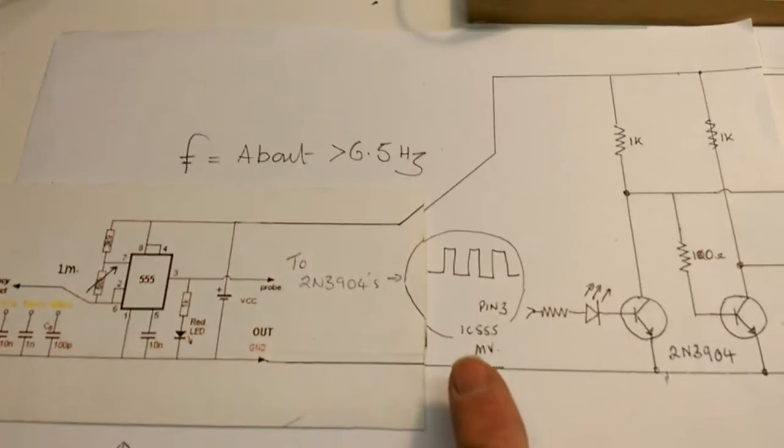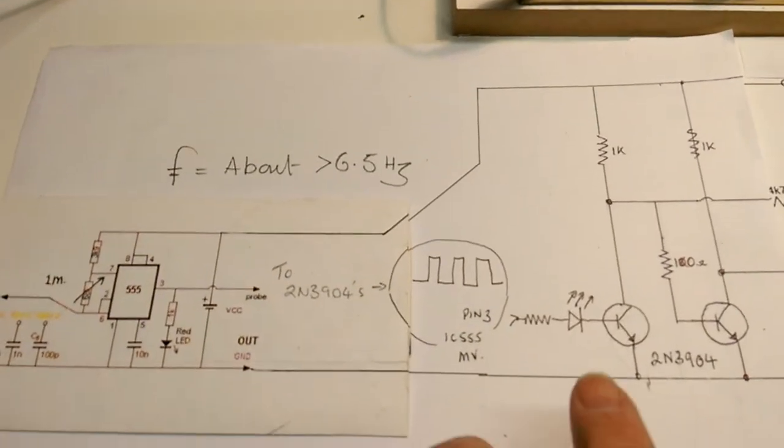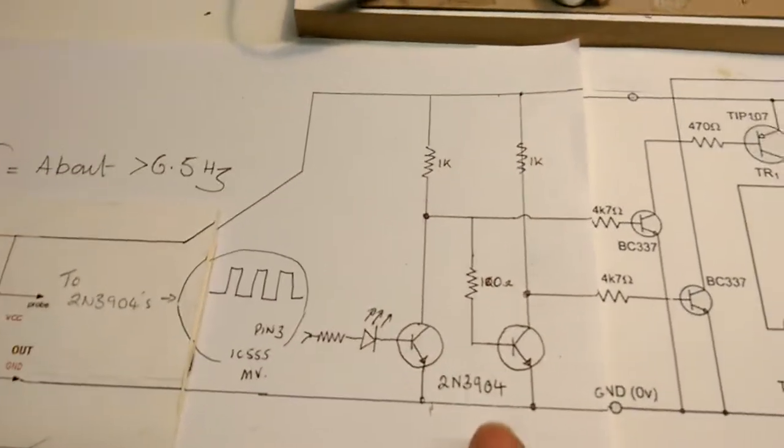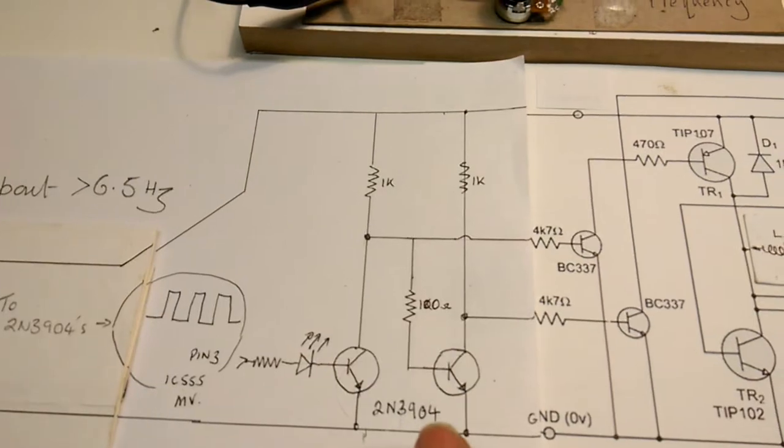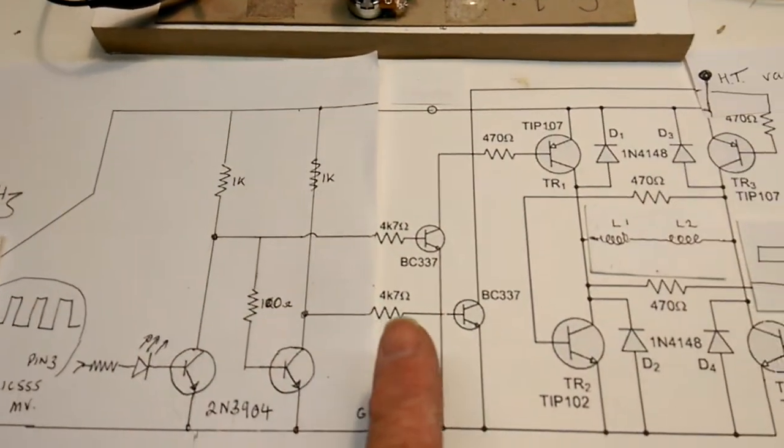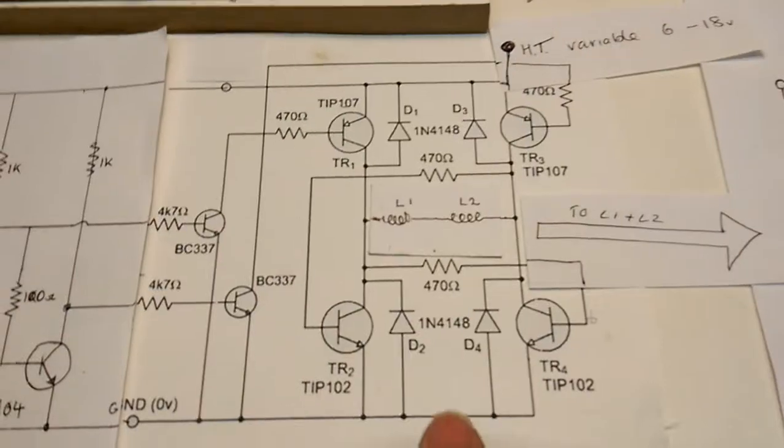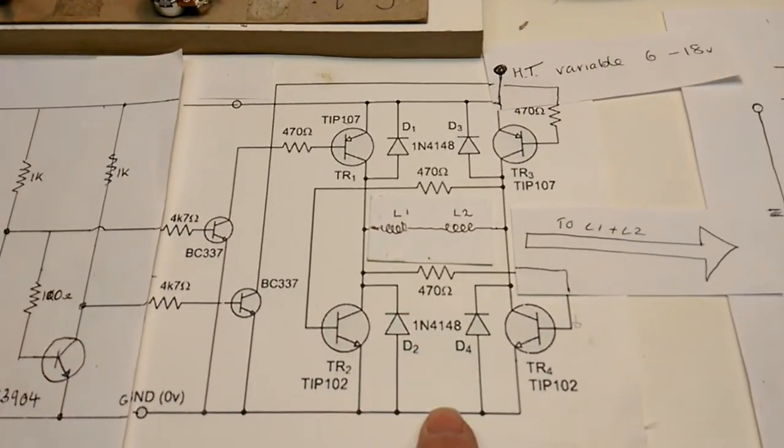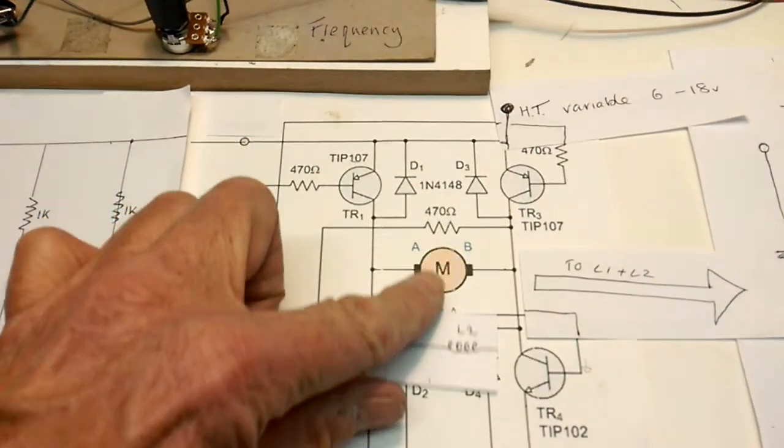This delivers a square wave to these two 2N3904s which are arranged to give an antiphase square wave signal into this H-bridge circuit which is originally designed to run a motor, you can see that.